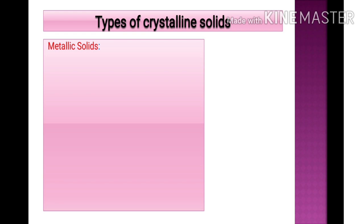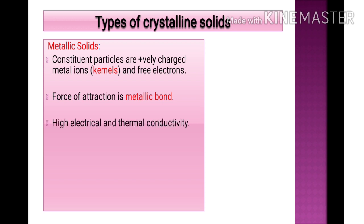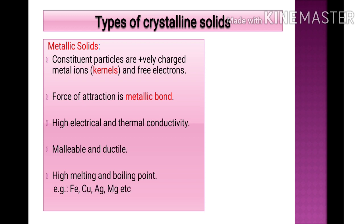Metallic solids have constituent particles that are positively charged metal ions, also termed kernels, and free electrons. The force of attraction is the metallic bond — an electrostatic force existing between metal ions and free electrons. They have high electrical and thermal conductivity because electrons are free to conduct electricity. They are malleable and ductile, and have high melting and boiling points due to the strong metallic bonding. Examples include magnesium, calcium, iron, copper, and silver.